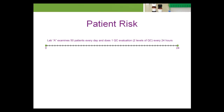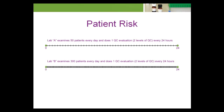Laboratory A tests two levels of QC every day and examines an average of 50 patient specimens per day. In the illustration, the horizontal axis is time, the vertical lines represent patient specimens, and the diamonds represent QC evaluations. Laboratory B evaluates QC at the same frequency as Lab A in terms of time, but Lab B examines an average of 300 patient specimens per day.